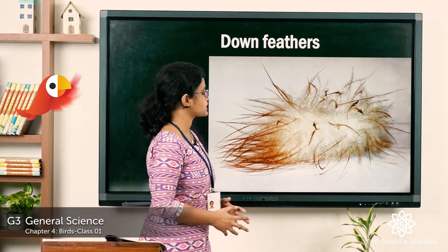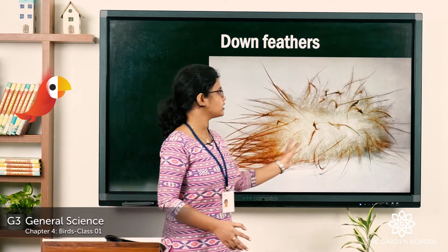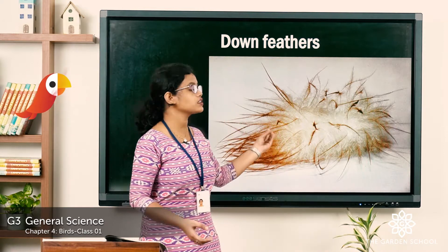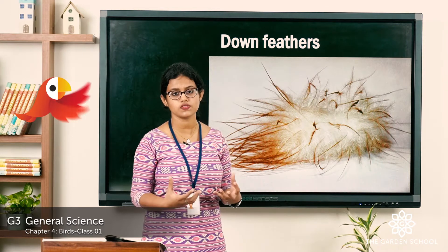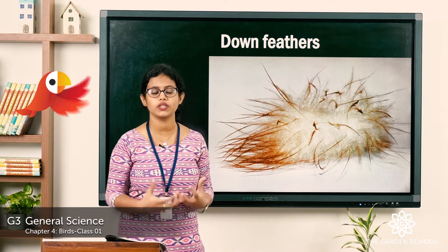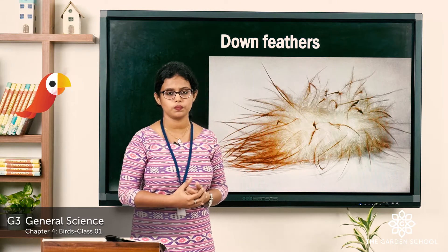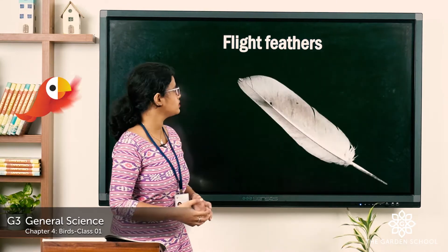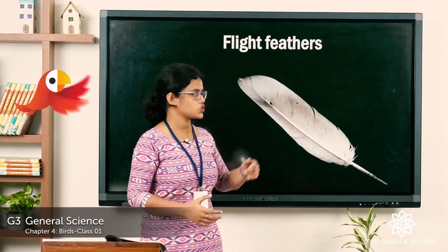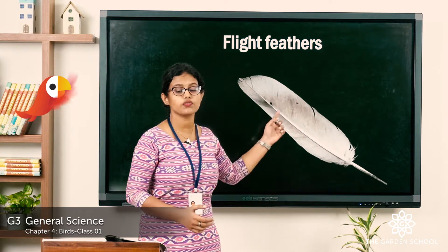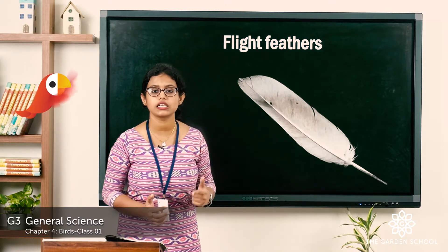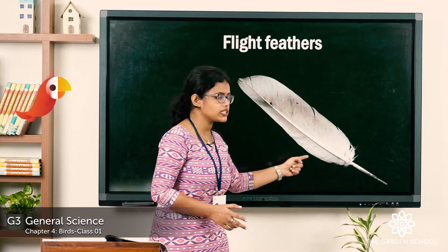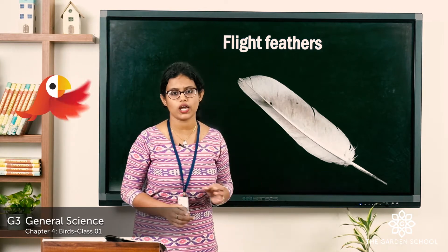The next type is the down feather. These feathers are small and fluffy and they keep the body of the bird warm. The next feather is the flight feather — this one is long and flat. You can see flight feathers on the wings and on the tail of the bird, and this flight feather helps the bird to fly.